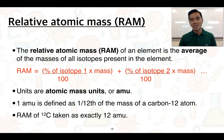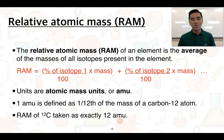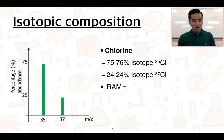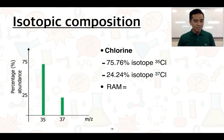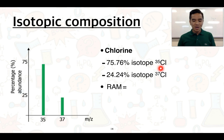We can discuss in class why carbon is used as the standard. For now, let's look at a worked example using chlorine. We've been given the isotopic composition of chlorine, and from the graph and data we can see the percentage abundance of the two isotopes: chlorine-35 makes up 75.76% and chlorine-37 makes up 24.24%.